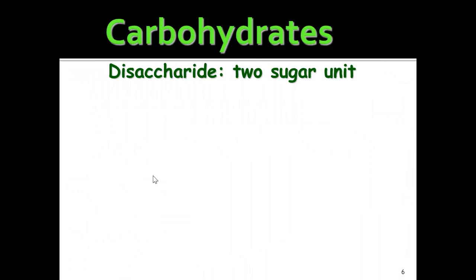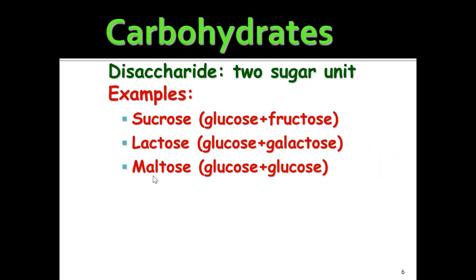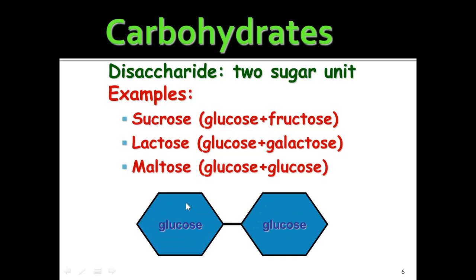Disaccharides are two sugar units — di means two. Examples are sucrose, which is glucose and fructose mixed; lactose, which is glucose and galactose — that's the sugar found in milk. If you hear of people being lactose intolerant, it means they cannot process lactose sugar. And maltose, which is basically two units of glucose. When you have two sugar units together, that's a disaccharide.